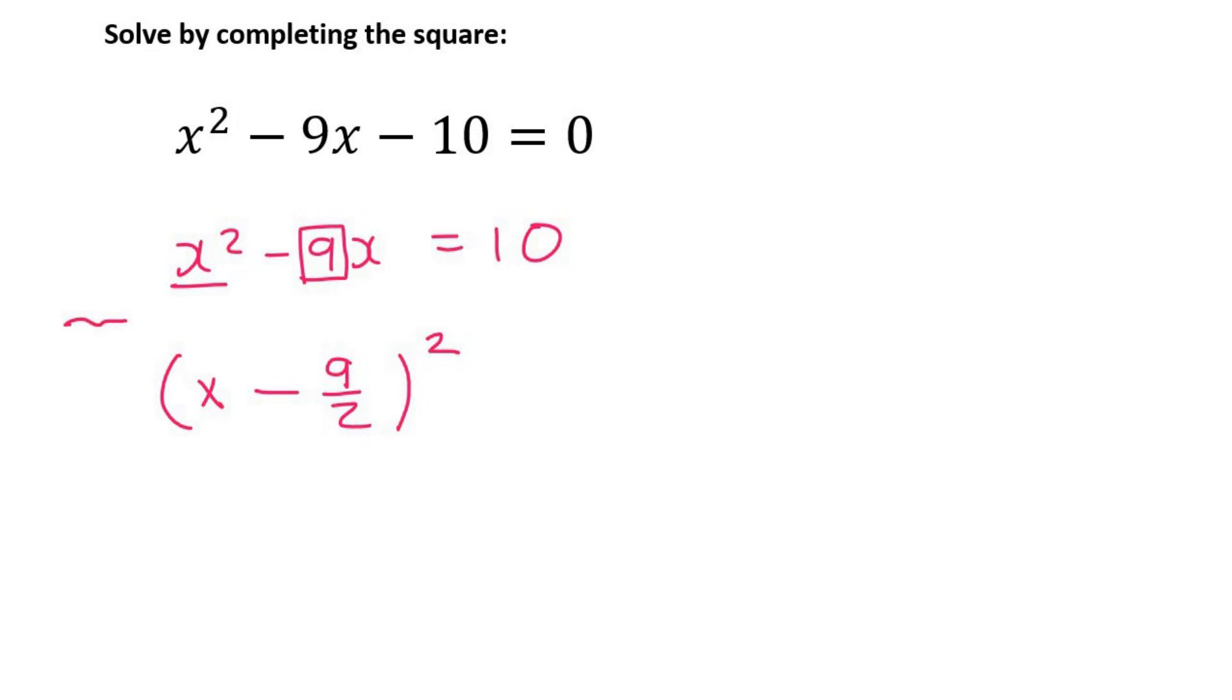Okay now you might have another step in between. I'm just using the shorter method and so then on the right hand side you're going to say 10 then you're going to say plus then you're going to put this number into a bracket squared.